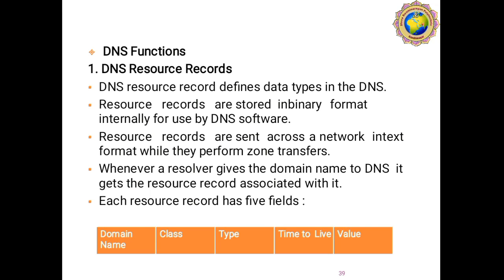DNS functions: first, DNS resource recording. DNS resource records define data types in the DNS and are stored in binary format internally for use by DNS software. Resource records are sent across the network in text format during zone transfers. Each resource record has five fields: domain name, class, type, time to live, and value.